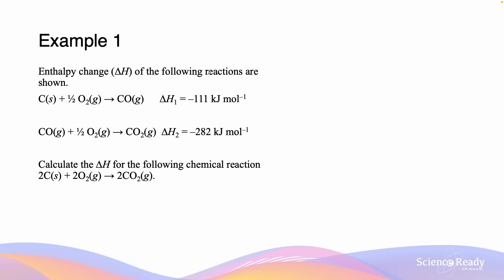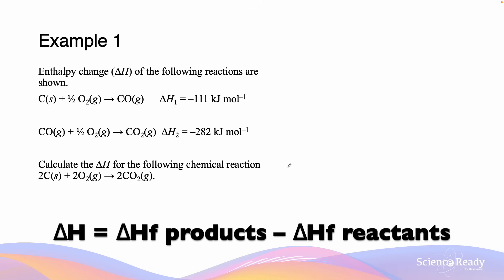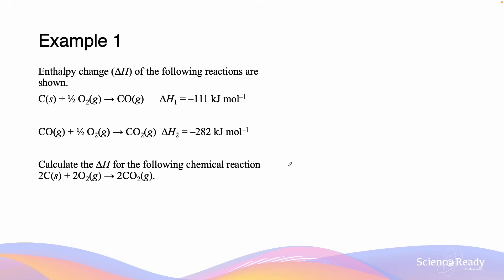The enthalpy change ΔH of the following reactions are shown: carbon reacts with oxygen to form carbon monoxide with ΔH of minus 111 kJ per mole, and carbon monoxide reacts with oxygen to form carbon dioxide with ΔH of minus 282 kJ per mole. Calculate the ΔH for the reaction where carbon reacts with oxygen to form carbon dioxide. We will solve this using two different methods — first using the enthalpy change equation, then using Hess's law with simultaneous equations.